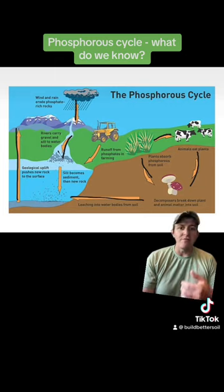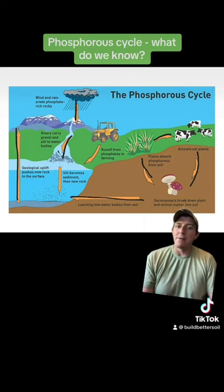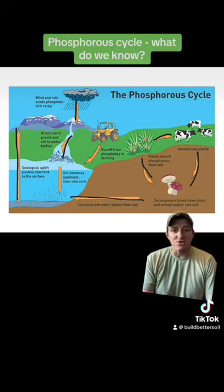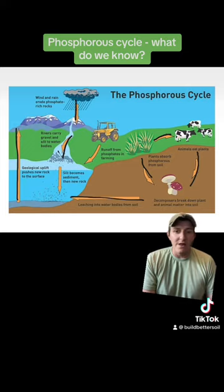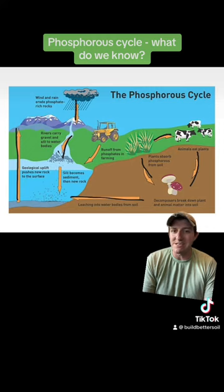So guys, when you do your soil test this year, if you feel like, man, my phosphorus is really, really low, I just feel like I need to apply it. I don't often recommend tillage. But if you're really dead set on applying phosphorus in a conventional form, say a triple 19 or something,